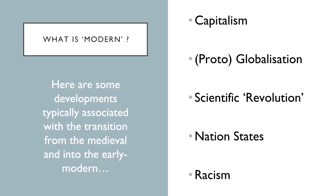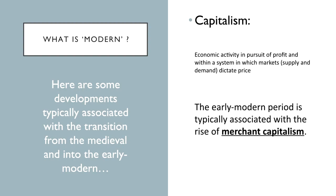That is difficult to do, and academics cannot agree definitively on how to do it. But let me give you my own sense. Historians have tended to associate modernity with changes towards capitalism — economic activity by individuals and groups in pursuit of profit within a system where markets, supply and demand, dictate price. The early modern period is generally associated with the rise of merchant capitalism: increased activity by traders and merchants moving goods around in pursuit of profit. Historians often draw a distinction between that and industrial capitalism, which came later during the modern period after 1800.